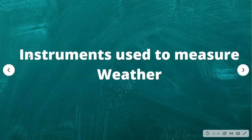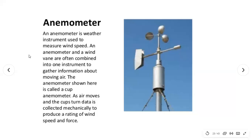What instruments are used to measure weather? The first is an anemometer — a weather instrument used to measure wind speed. An anemometer and a wind vane are often combined into one instrument to gather information about moving air. The cup anemometer shown here collects data mechanically as the cups turn to produce a rating of wind speed and wind force.